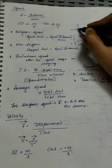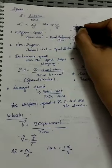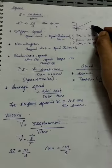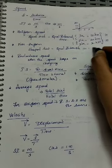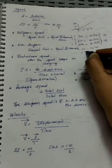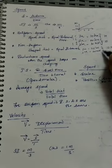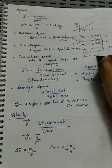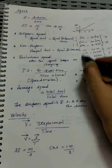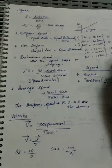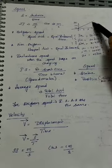For uniform speed, if you plot distance against time — 1, 2, 3 hours versus 10, 20, 30 km — you get a straight line graph. Non-uniform speed is the opposite: in the first hour I travel 7.5 km, in the second 20 km (difference 12.5), in the third 25 km (difference 5). Since equal distance is not covered in equal time, the graph is not a straight line.